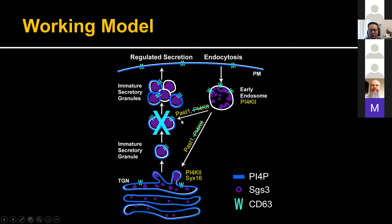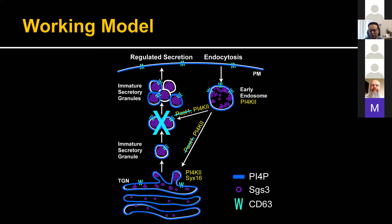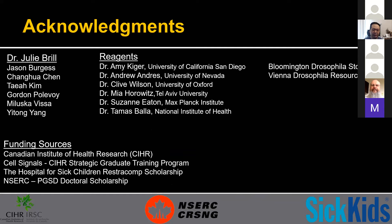In summary: CD63 promotes granule maturation and requires PI4K2, Pas1, and Syntaxin 16. Pas1 and Syntaxin 16 regulate PI4K2 activity, presumably in retrograde trafficking, and this is critical for distributing PI4P onto secretory granule membranes. Without PI4K2, granules fail to mature, early endosomes enlarge with occasional granule marker mislocalization, and PI4P on immature secretory granules is strongly reduced. Similarly, loss of Pas1 produces a comparable phenotype with PI4P accumulating in early endosomes instead of granule membranes. Thank you for listening — I'd like to take questions.